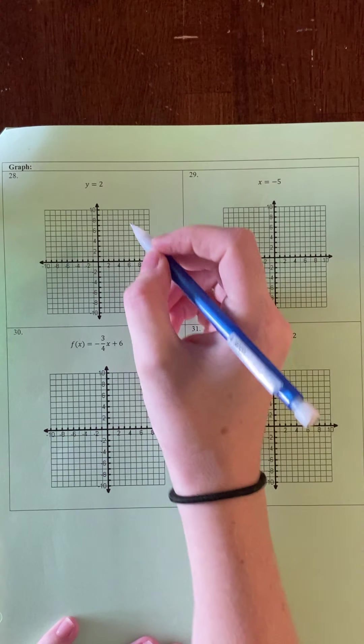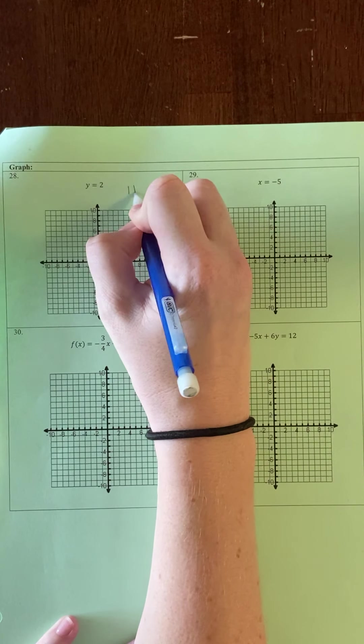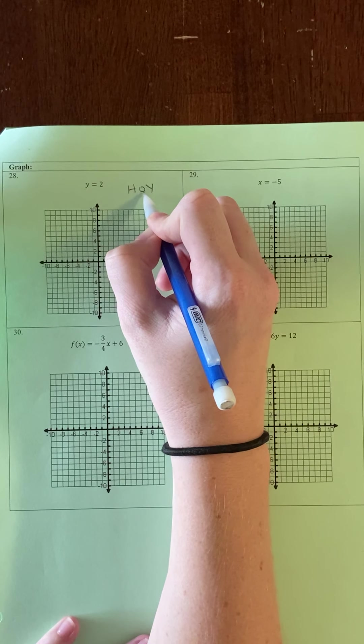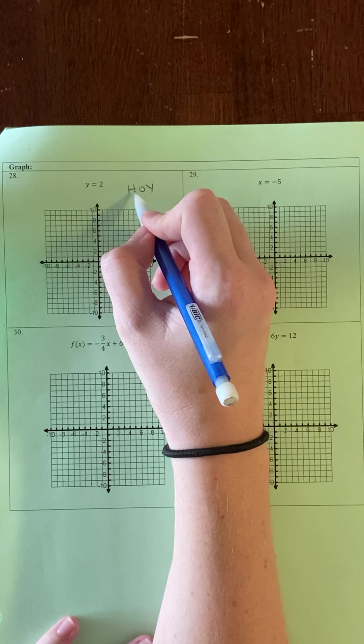Now remember, this is one of our special cases. When y equals a number, that's our acronym HOI. Y equals a number has a slope of 0 and is a horizontal line.